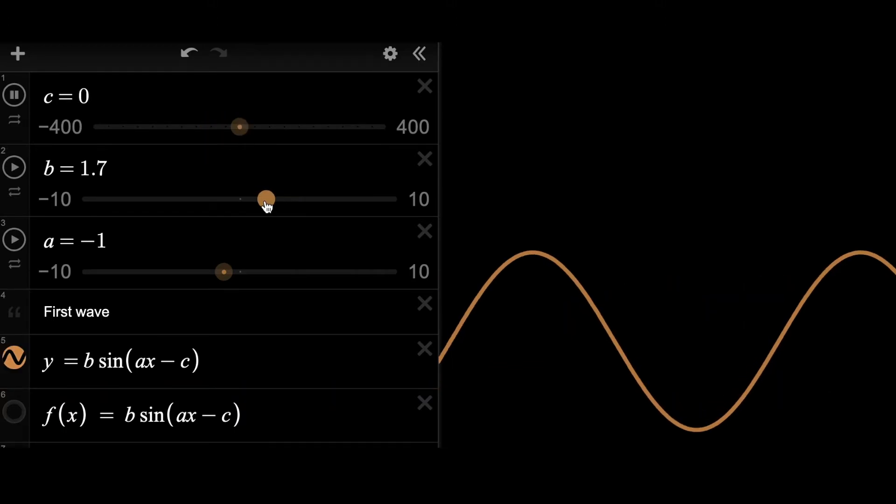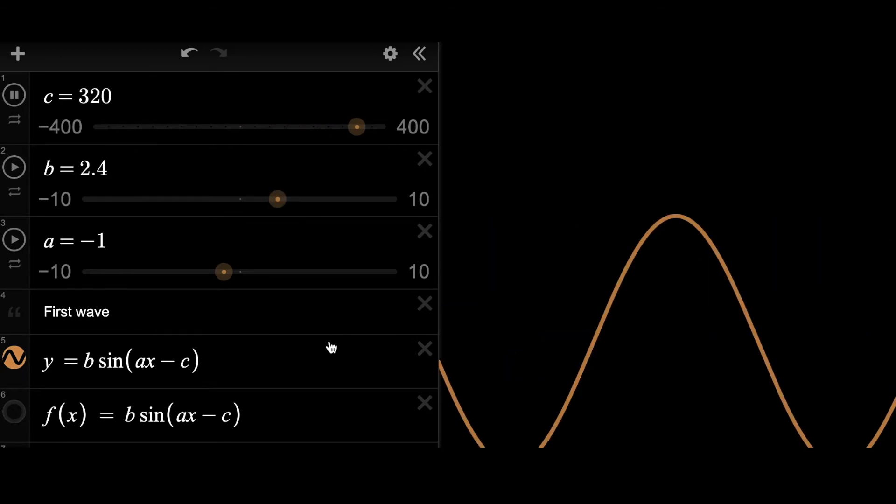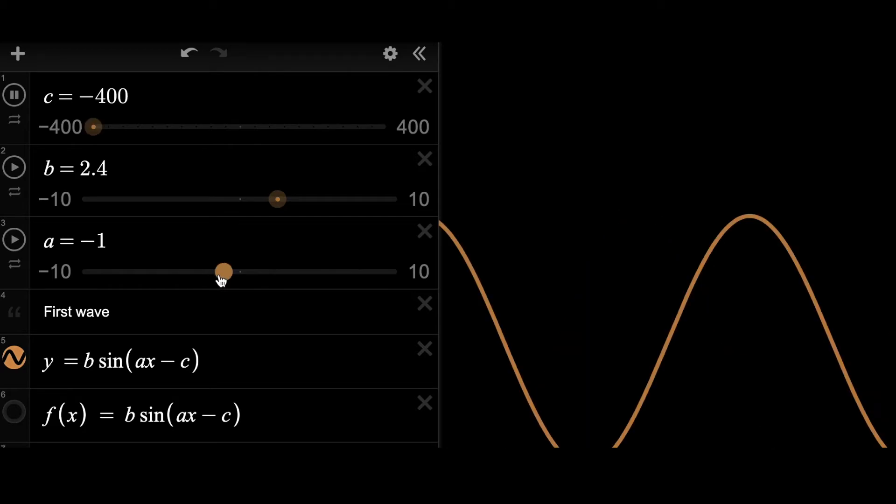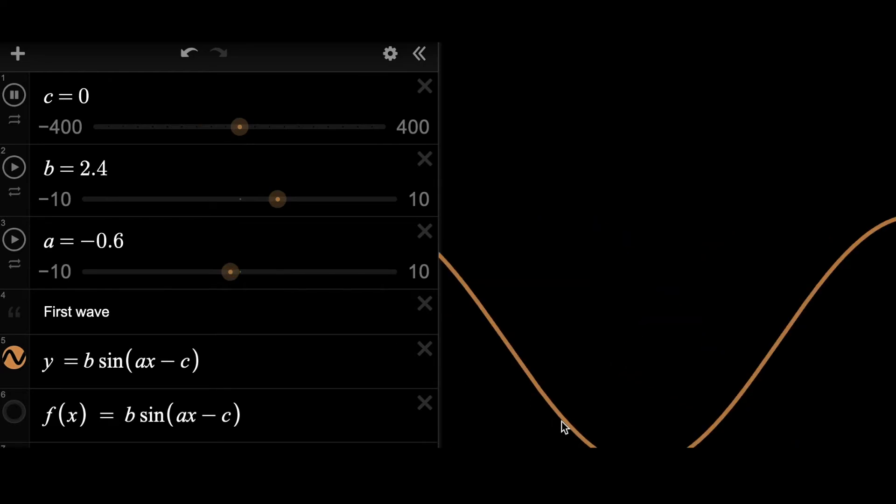As you can see that this wave is transforming as I'm adjusting the parameters a, b, and c. Here we have a moving wave that is created by applying a linear transformation on a sine function.